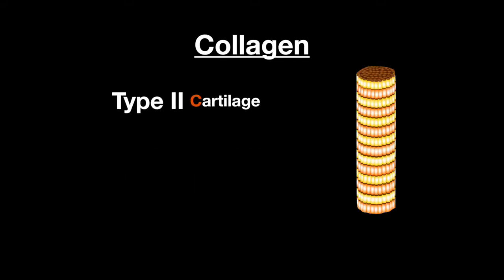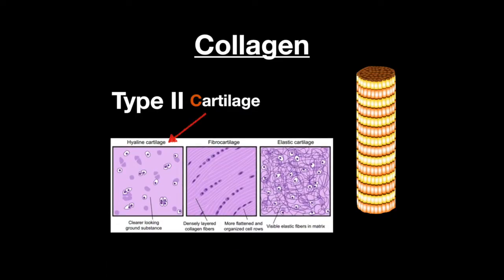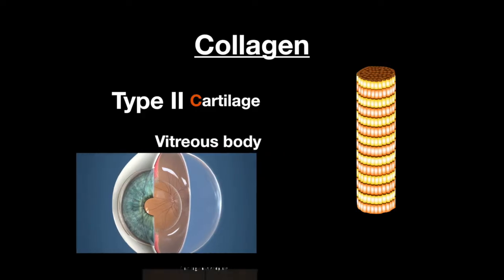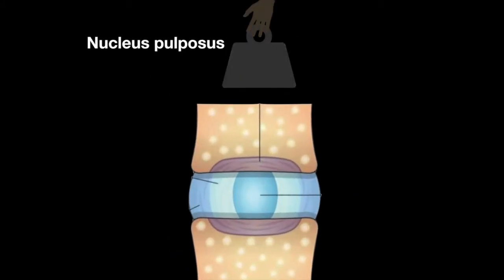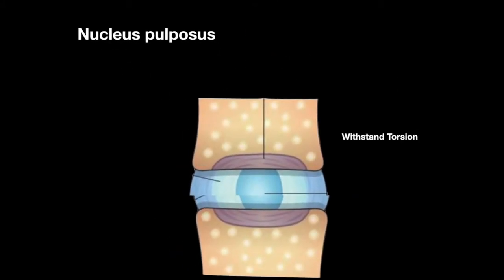Type 2 makes up the cartilage, including the hyaline cartilage, the vitreous body — which is the clear fluid in the eye — and the nucleus pulposus. The nucleus pulposus is a jelly-like substance in the vertebrae that withstands compression and torsion.